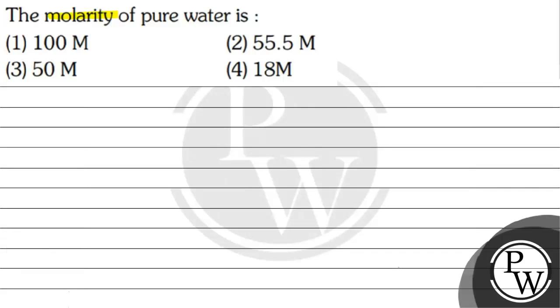Let's read this question. The molarity of pure water is: option 1, 100 molar; option 2, 55.5 molar; option 3, 50 molar; option 4, 18 molar. The key concept for this question is molarity.